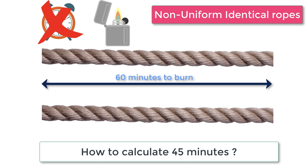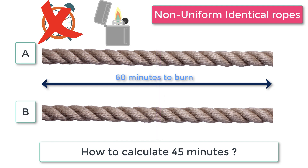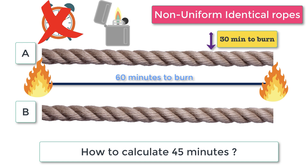Since the ropes are non-uniform, cutting a rope in half does not mean each half burns in 30 minutes. However, if you burn a rope from both ends, it will take exactly 30 minutes to burn completely — regardless of composition — because both ends are consuming the rope simultaneously. To calculate 45 minutes, one rope is not sufficient; you need both ropes.